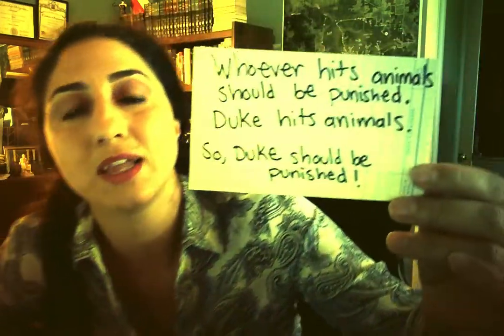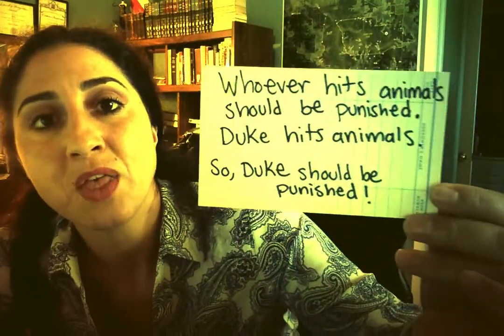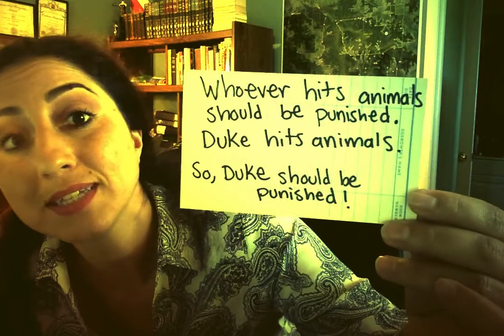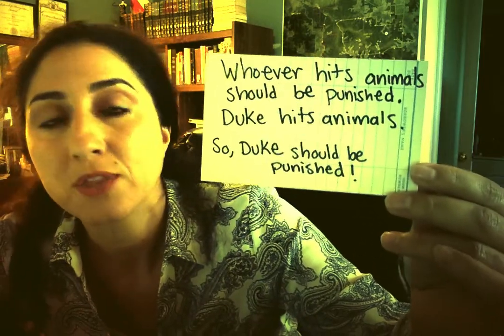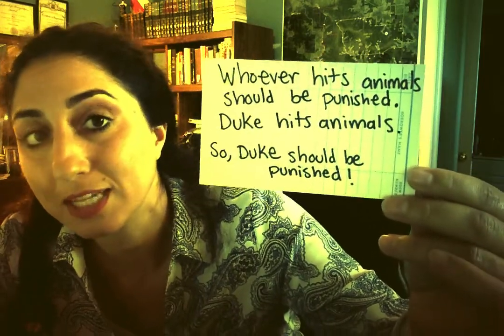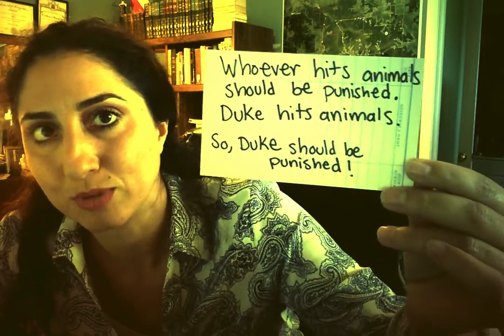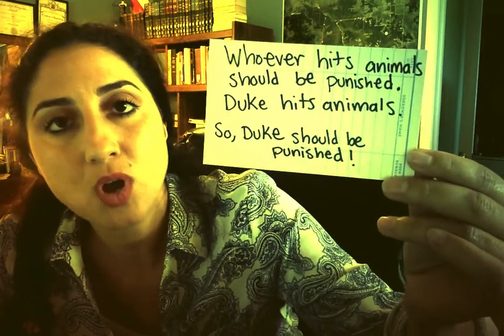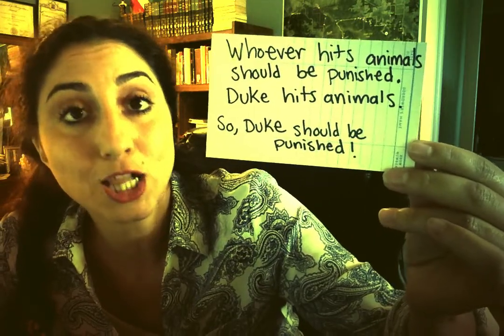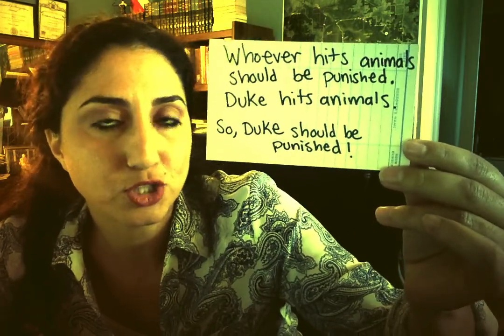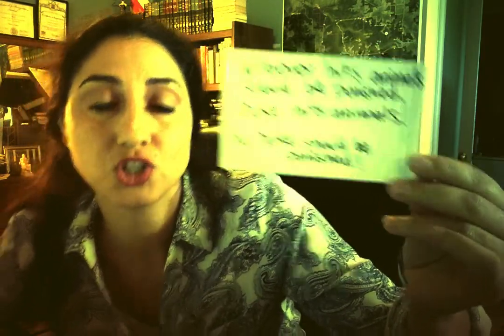It turns out that they're thinking that whoever hits animals should be punished. They're also thinking that Duke hits animals. And they're drawing from those two premises the conclusion that Duke should be punished. Of course, they're storming into the room and just exclaiming the conclusion that Duke should be punished!